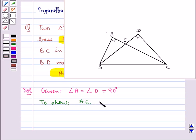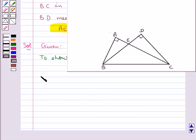First we have that in triangle AEB and triangle DEC, angle A is equal to angle D is equal to 90 degrees, which is already given to us.